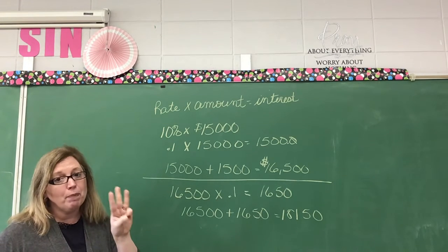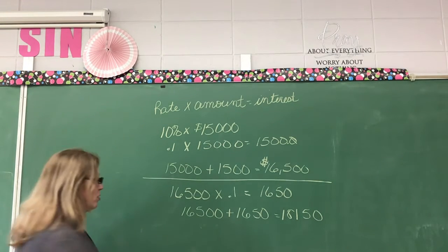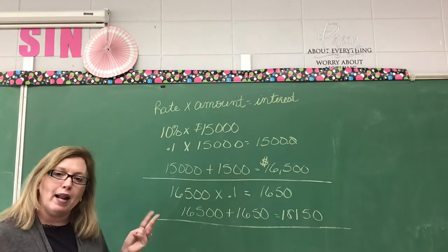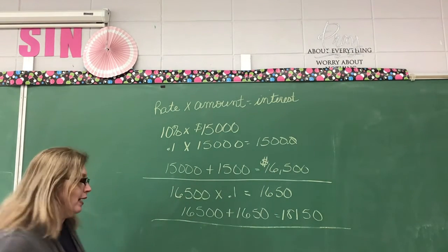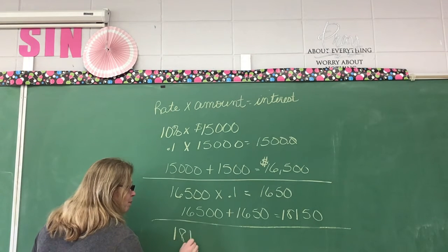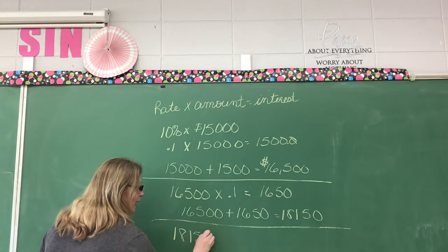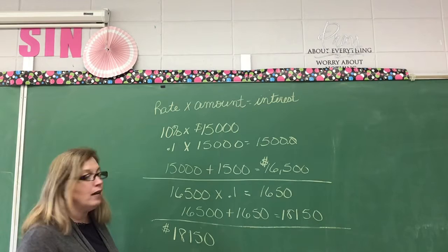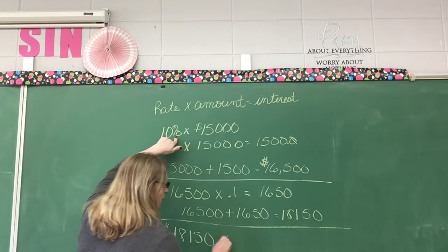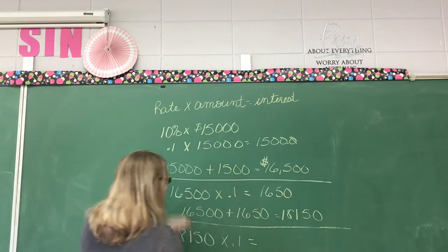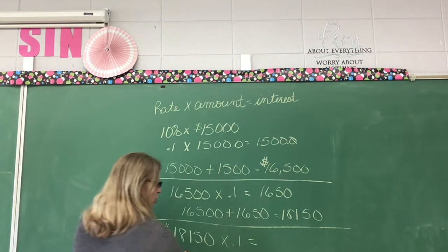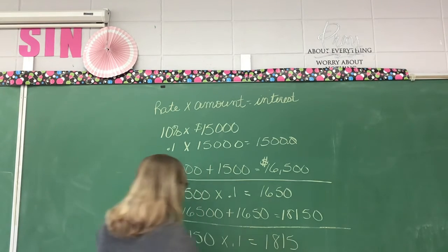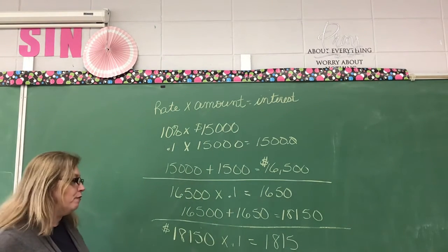They said he's going to compound it for three years — this is the end of year two. What happens in year three? Take the amount of money he put in the bank at the beginning of year three, $18,150, and multiply it by his rate of 0.1. He earned $1,815.